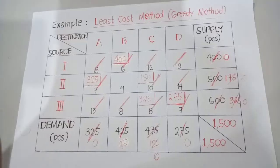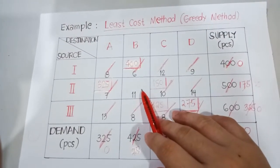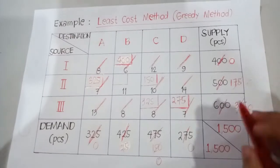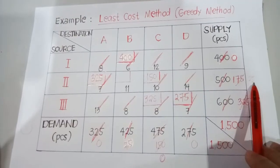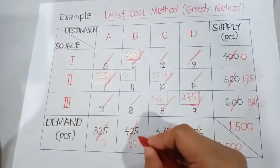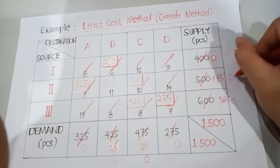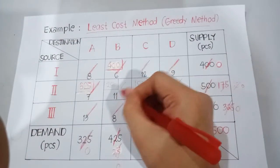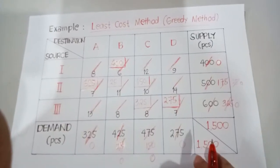Finally, we are left with one cell — cell number 11 — and we do our last allocation here. Both the demand and supply values are 25 pieces, so we plug in 25 pieces and both are zeroed out. All cells are now marked out.